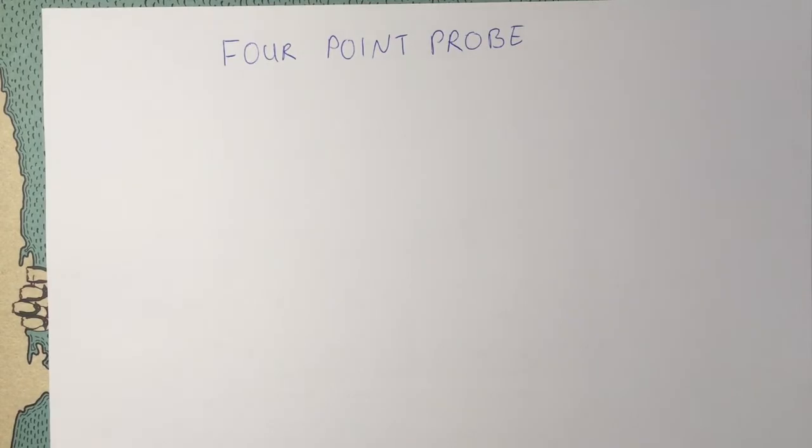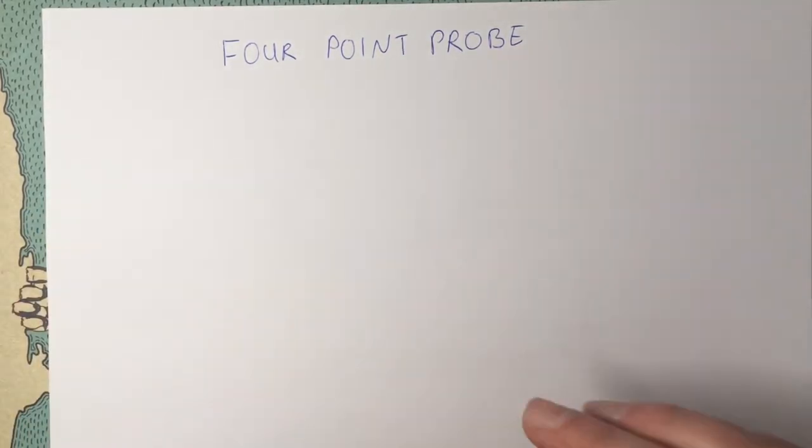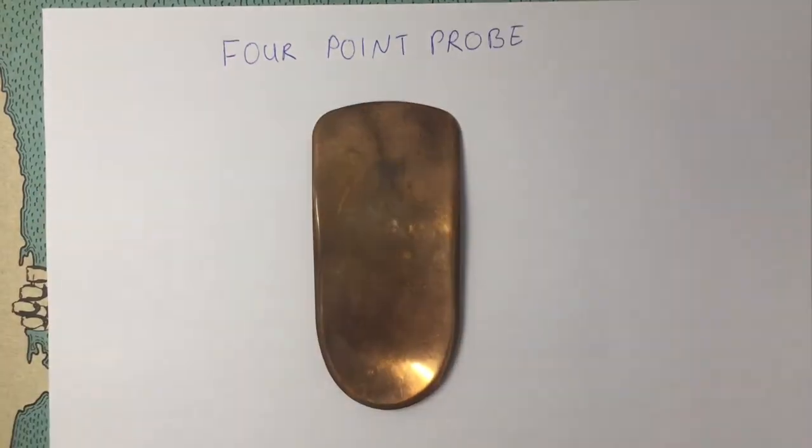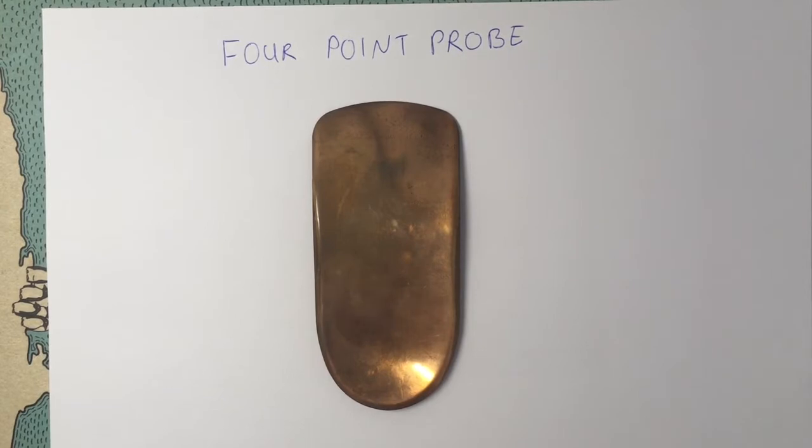Contact resistance is a common problem in resistance measurements, so we'll just demonstrate that with this old piece of copper or brass that's a little bit tarnished, so it's got quite a poor surface quality for measuring resistance.